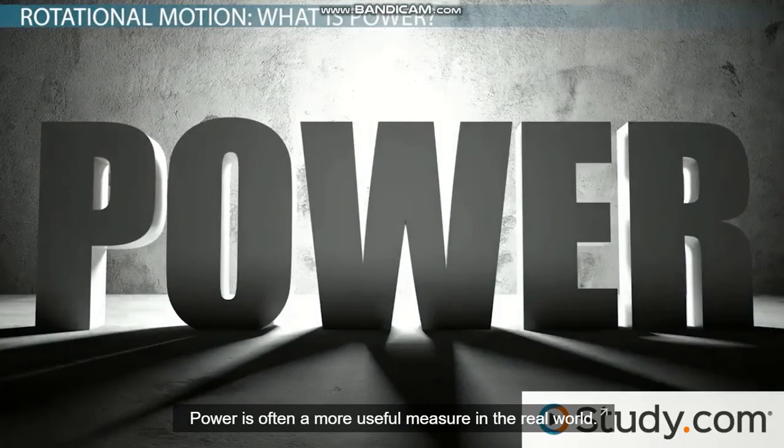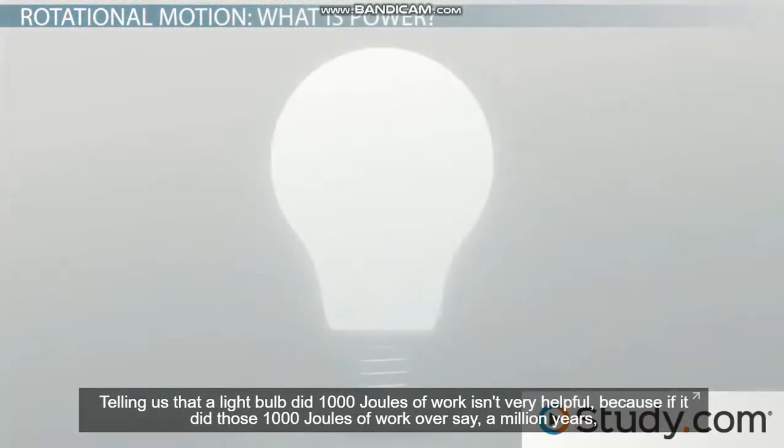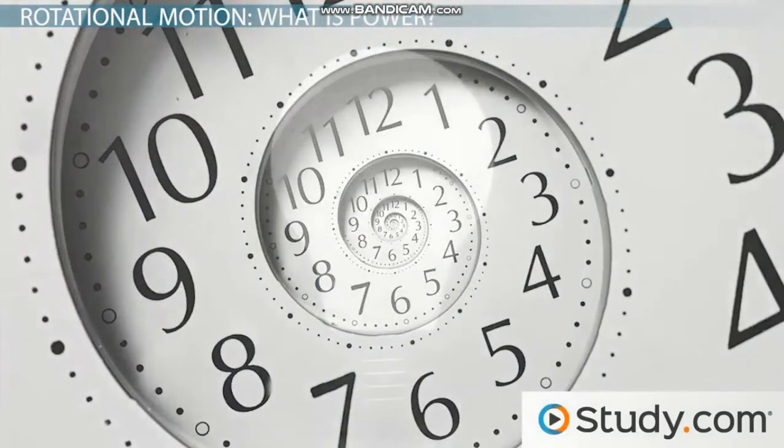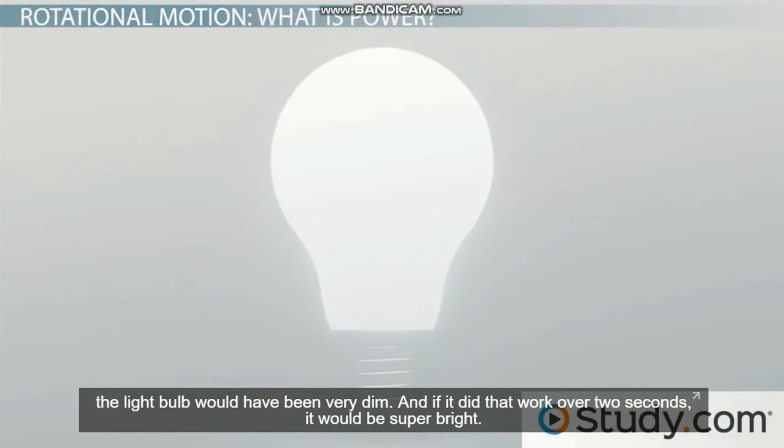Power is often a more useful measure in the real world. Telling us that the light bulb did a thousand joules of work isn't very helpful. Because if it did those thousand joules of work over, say, a million years, the light bulb would have been very dim. And if it did that work over two seconds, it would be super bright.